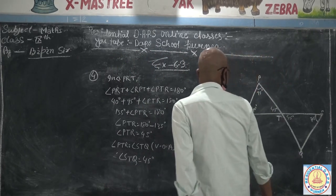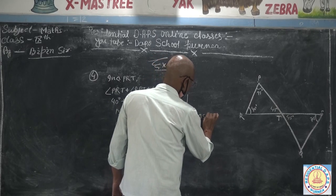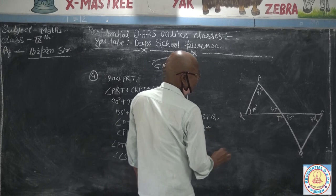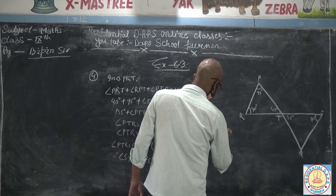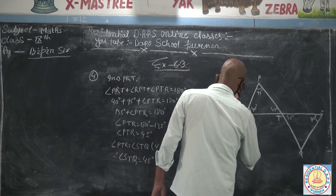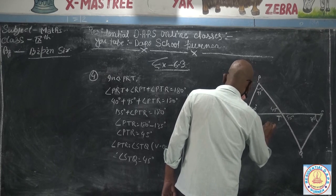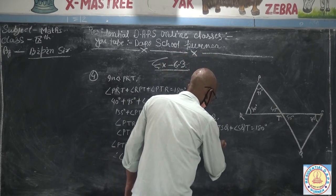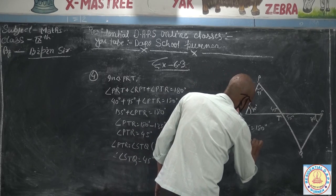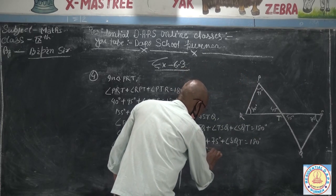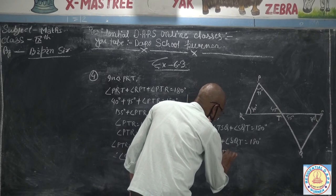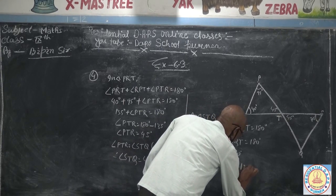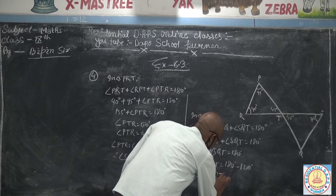Again, in triangle STQ: angle STQ plus angle TSQ plus angle SQT is equal to 180. So 45 plus 75 plus angle SQT equals 180. That gives 120 plus angle SQT equals 180, so angle SQT equals 60 degrees.